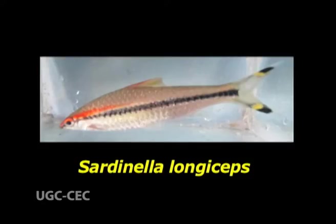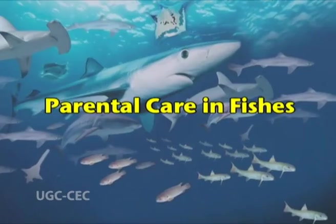Sardinella longiceps, during certain seasons between August and February, appears in large numbers on the west coast for feeding on plankton, but during March and July they are completely absent. This can be correlated to the distribution of plankton, which forms their food during the above seasons.